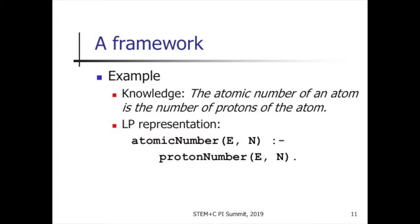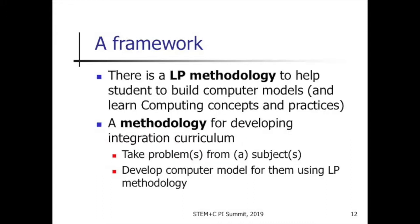Here is an example. Here is the domain knowledge used to solve one of the earlier problems: the atomic number of an atom is the number of protons of the atom. That's the knowledge we want students to know, and we want them to be able to write it. Here is the logical representation. We read it as: the atomic number of element E is N if the proton number of element E is N. That's why the LP representation is very natural to this knowledge.